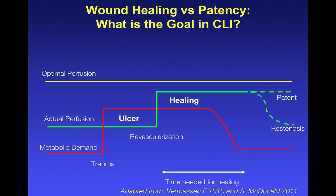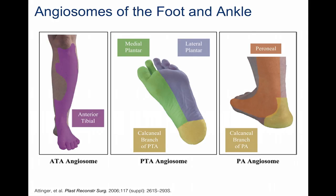Most of the time we use angiosomes, which are derived from plastic surgery — the concept that a certain part of tissue is supplied by a certain branch. You can see the anterior tibial/dorsalis pedis angiosome, the posterior tibial medial and lateral plantar angiosomes on the plantar aspect of the foot, and the peroneal angiosome.